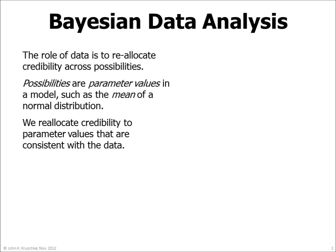In Bayesian data analysis, the role of data is to reallocate credibility across possibilities. The possibilities are parameter values in a model, such as the mean of a normal distribution. We reallocate credibility to parameter values that are consistent with the data.